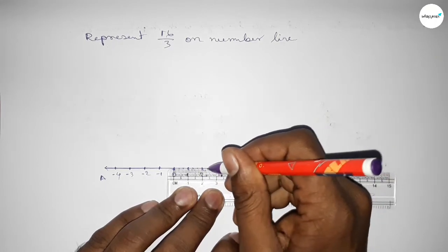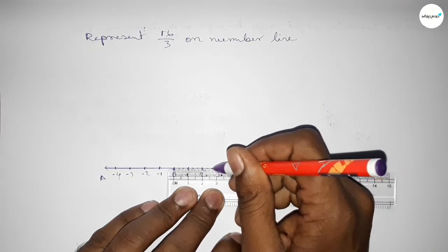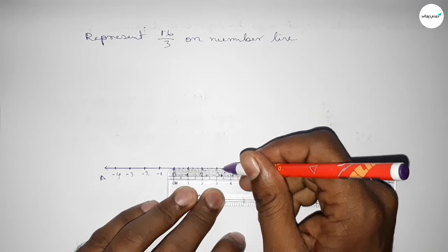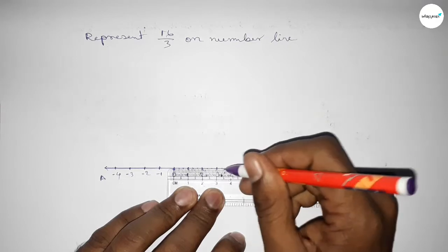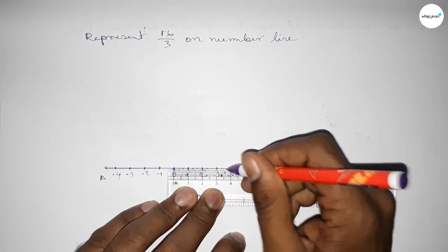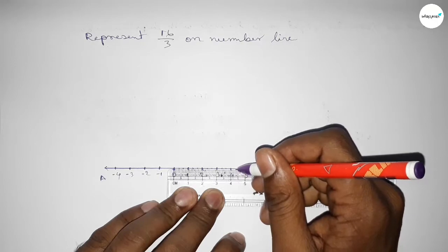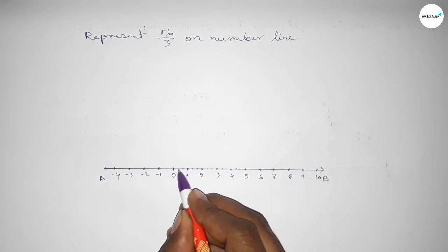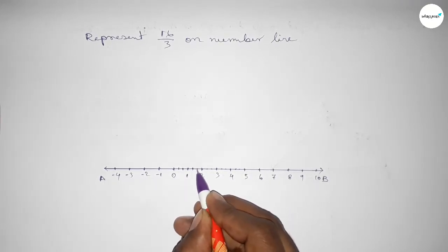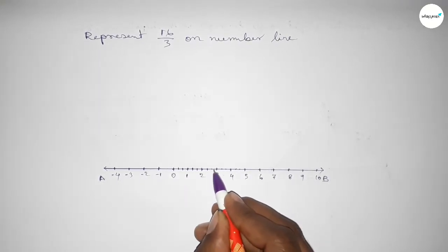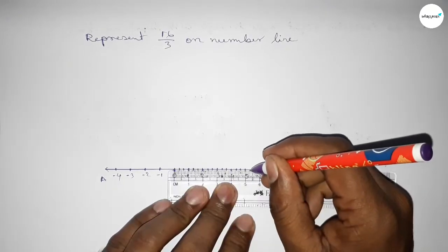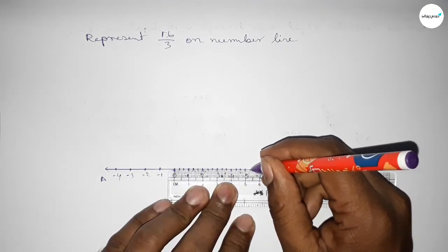Now dividing the distance between two to three — this is 0.3 something and this is 0.6 something approximately. Again dividing the distance between three to four. By this way we can divide the distance between any two numbers into three parts approximately. Now marking the numbers with deep color to understand perfectly.